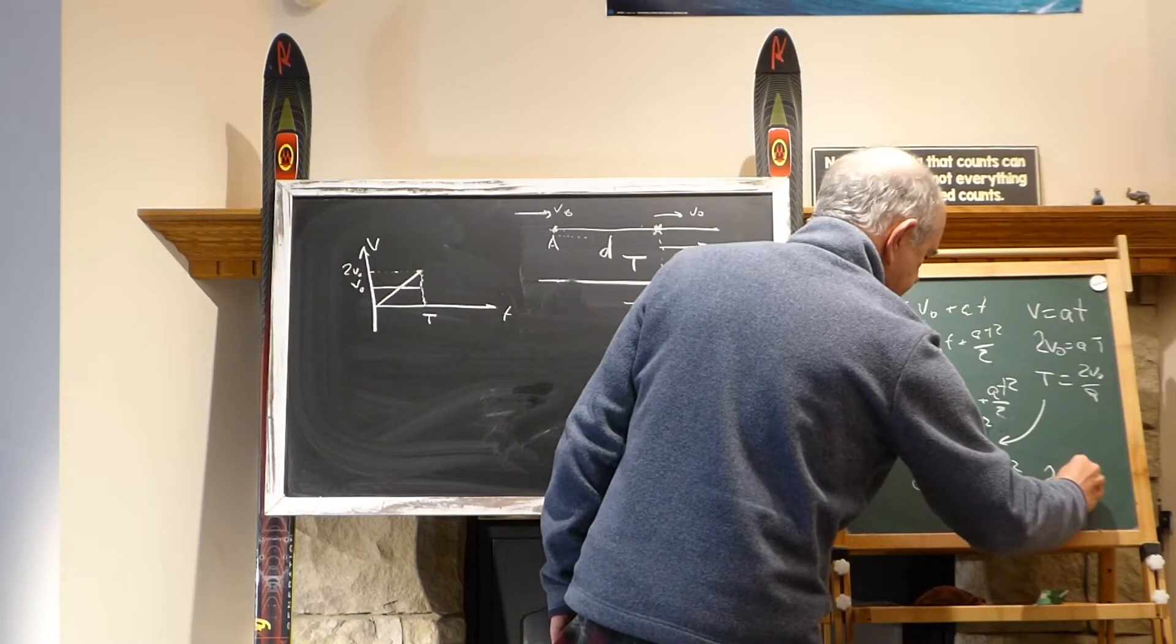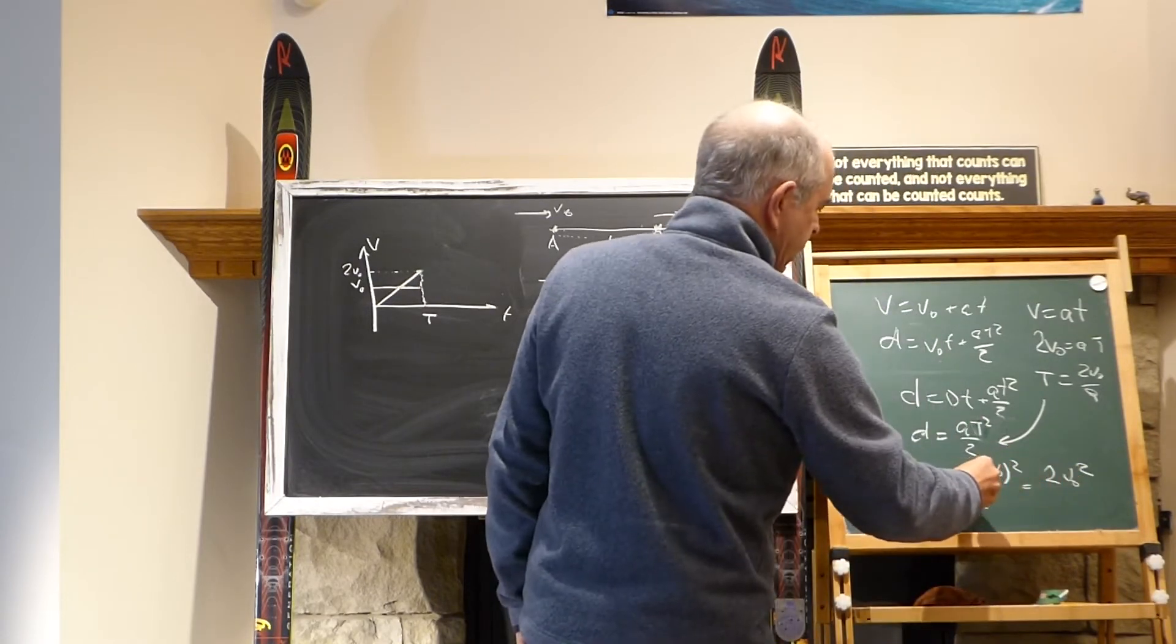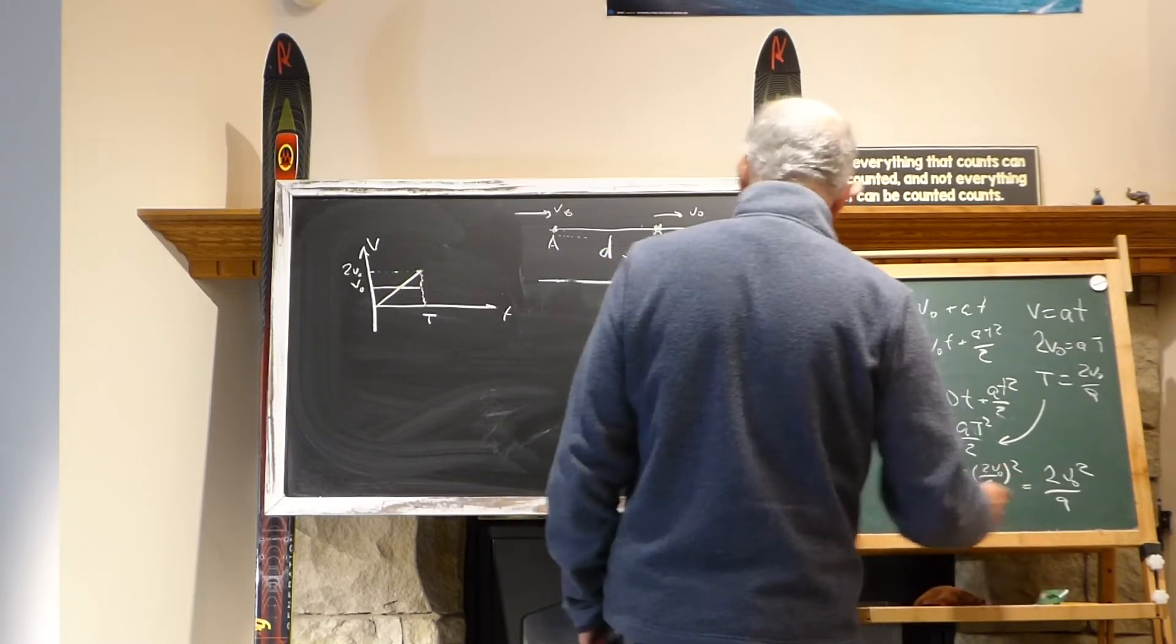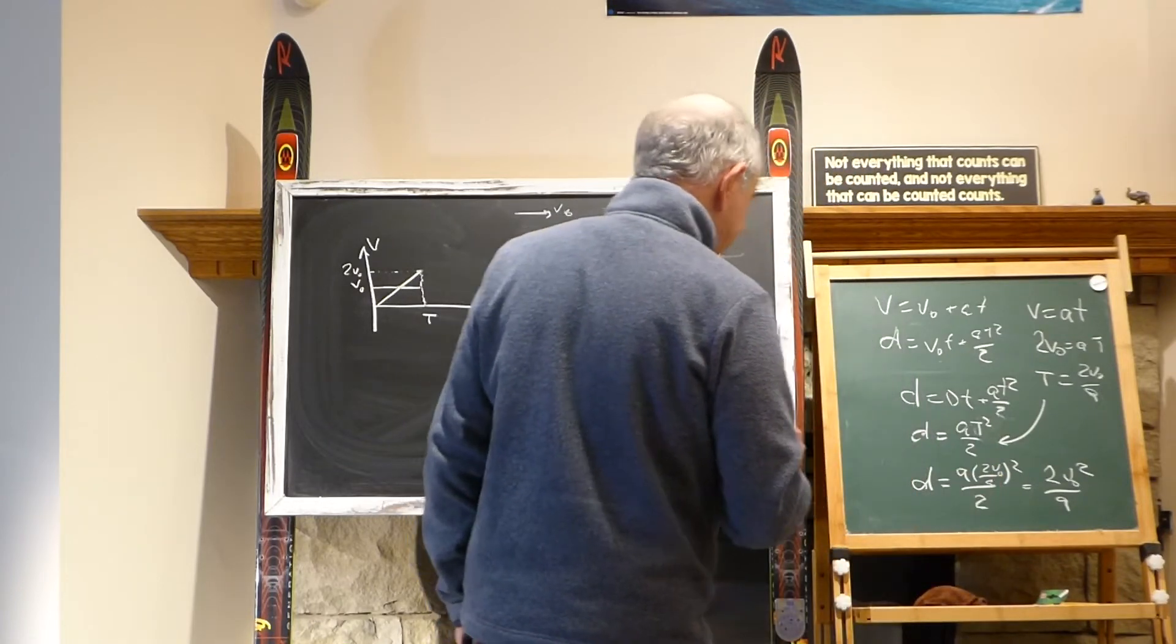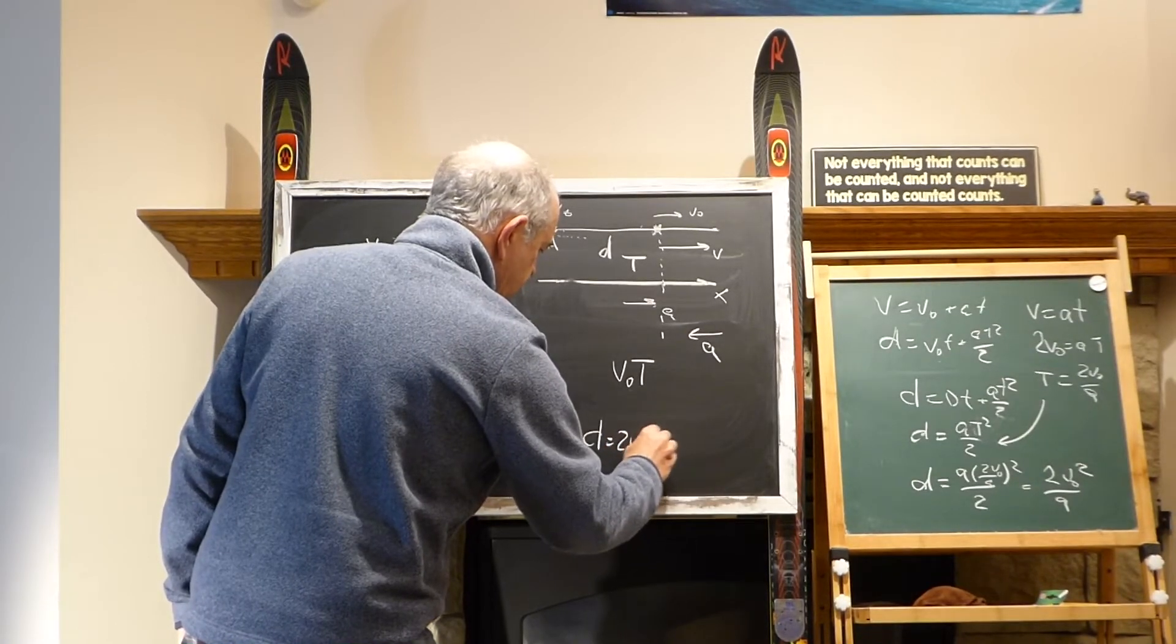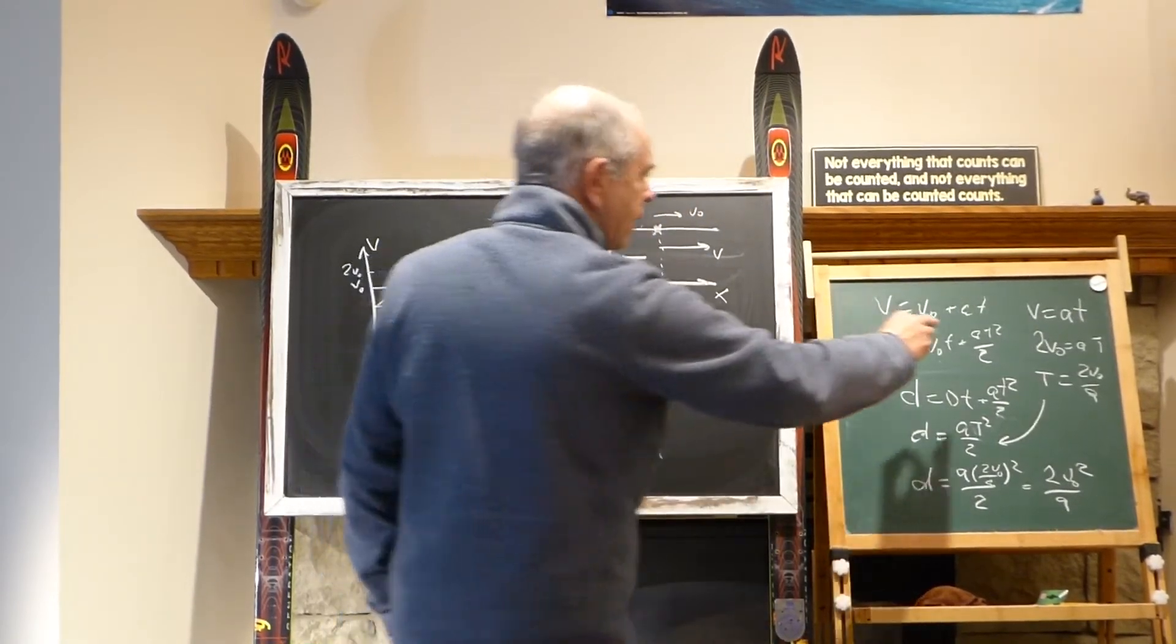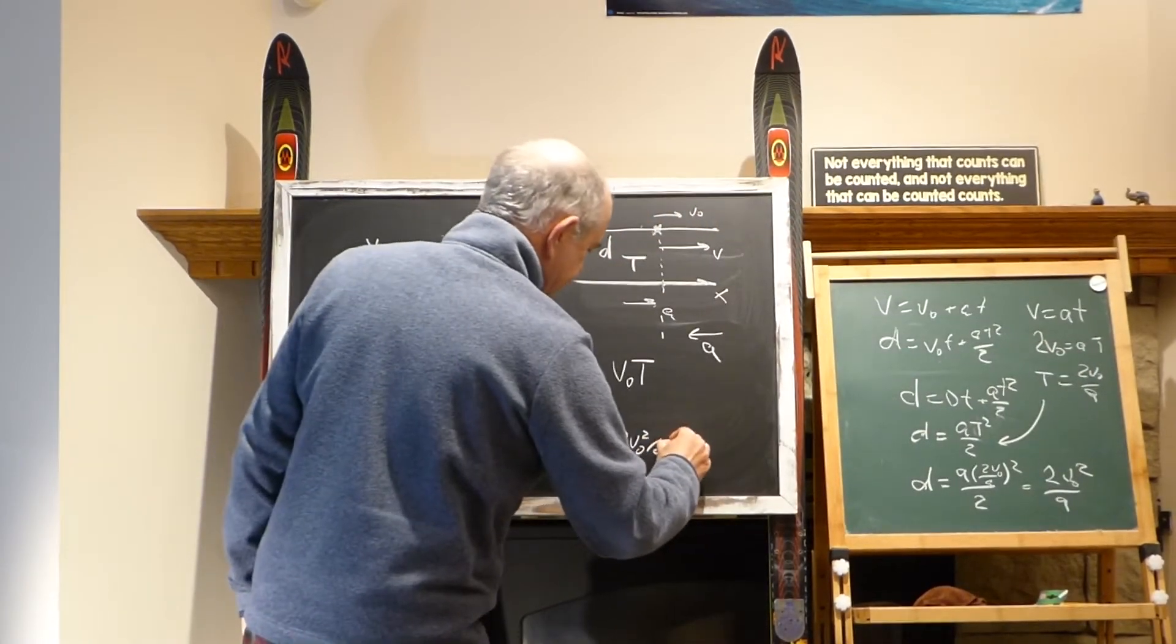We receive d equals a/2, and instead of t we put 2v0 over a squared. This becomes 4 divided by 2, which is 2v0² over a. But we know that t is actually 2v0 over a, so we can say that d equals v0*t.